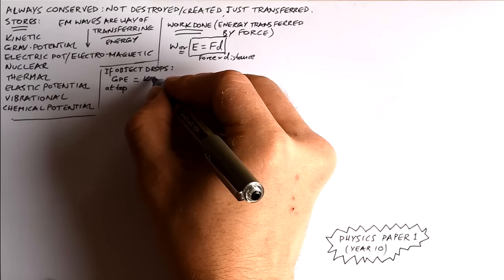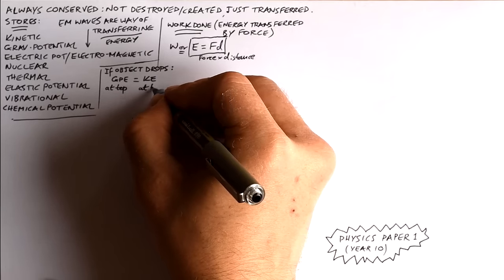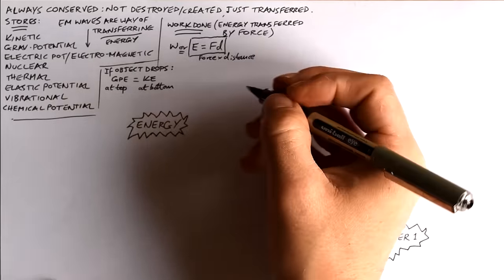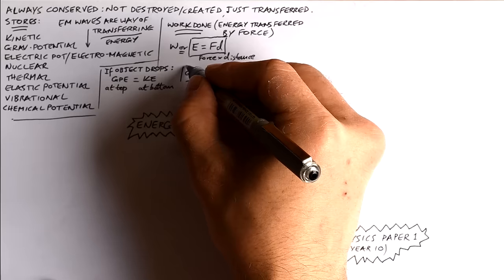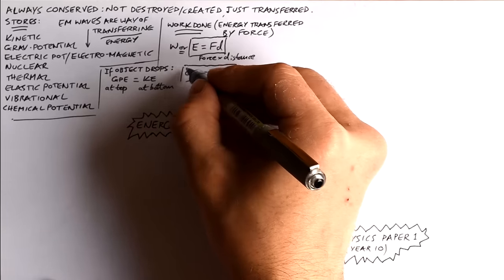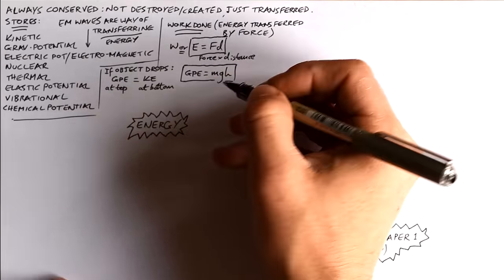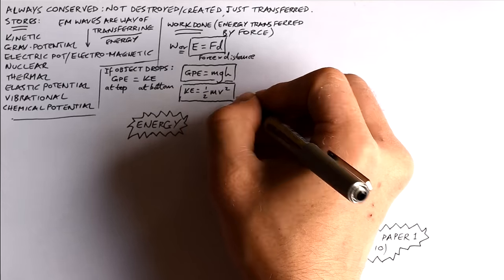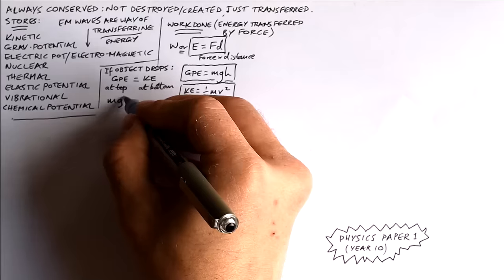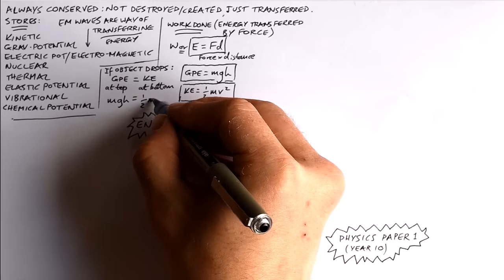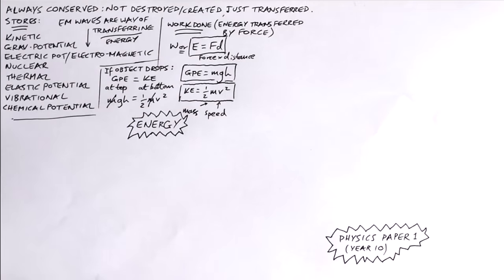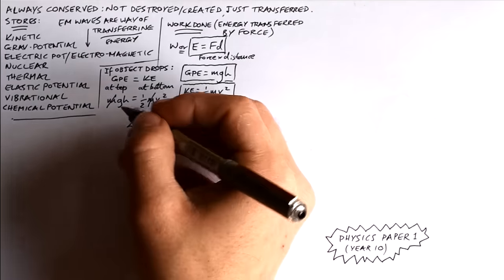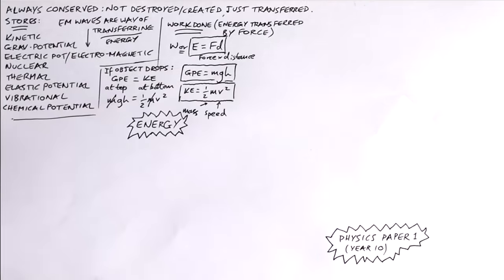If you have something that drops from a certain height then we know that the gravitational potential energy or GPE at the top is going to be equal to the kinetic energy at the bottom. That's assuming there's no energy lost to the surroundings through friction or air resistance. We know GPE is equal to MGH, mass times gravitational field strength 9.81 times the height. Kinetic energy is equal to half mv squared where v is the speed in meters per second. If it's an ideal situation we can say MGH equals half mv squared and the m's cancel, so if you want to find the speed that something hits the floor with you don't need to know its mass.